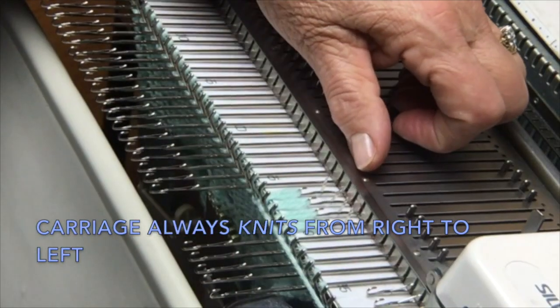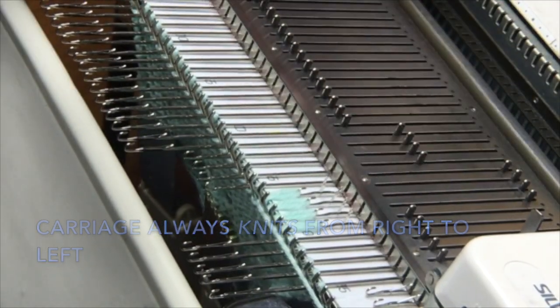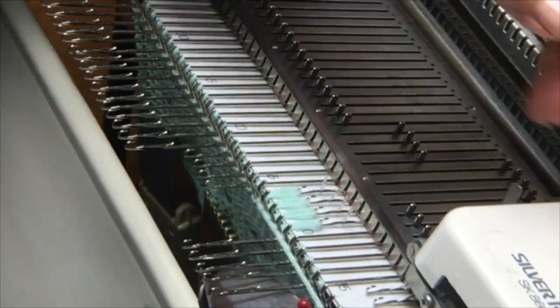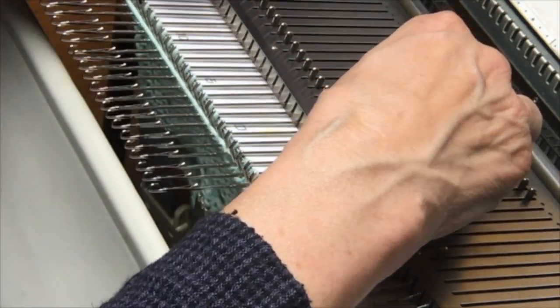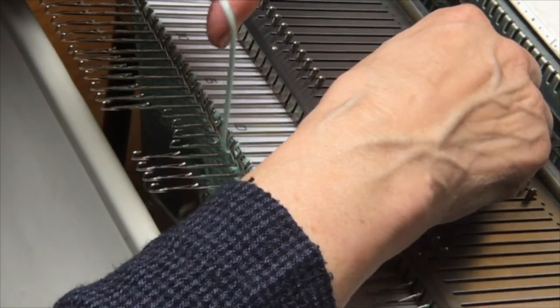I'll back up the carriage and then I'm going to knit the next four needles, return them to upper work position, knit them with stitch size 7 and hold them, and then manually knit the next four needles.